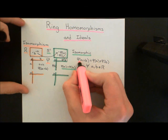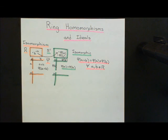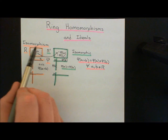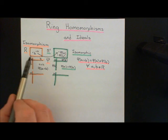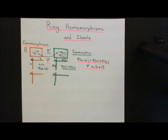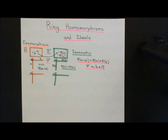This is our formulaic way of capturing the concept that when you use this bijective relabelling map — this ring isomorphism — to relabel all the elements of the domain ring, the addition composition table actually becomes the addition composition table on the codomain ring.